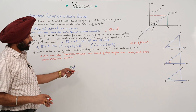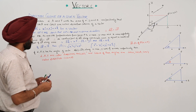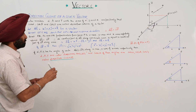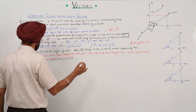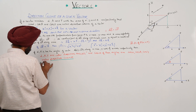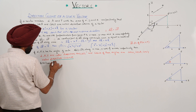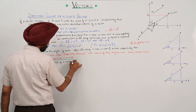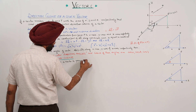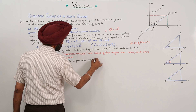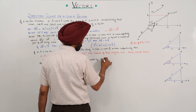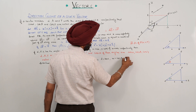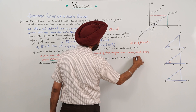The cosines of these angles — cos alpha, cos beta, and cos gamma — are called direction cosines. Direction cosines of a vector are generally denoted by L equal to cos alpha, M equal to cos beta, and N equal to cos gamma.